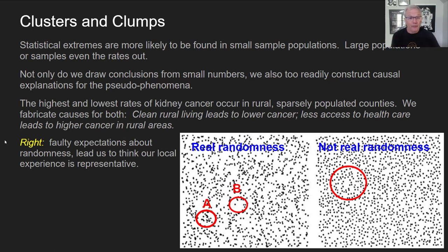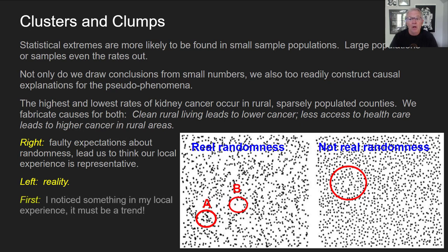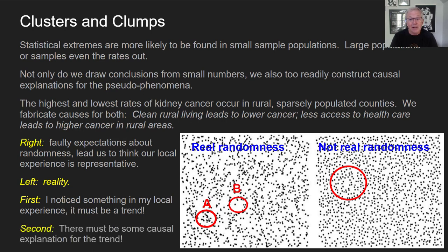In the left pattern of dots, it's more like a real, actual random distribution. What happens is: first I notice something in my local experience — suppose I'm in a busy cluster — and I think, 'There's something going on here. It must be a trend.' Either it's an empty trend or a very busy one: lots of cancer here, or no cancer here. Then, second, I jump to the conclusion there must be some causal explanation. The mistake the law of small numbers warns against is thinking your small sample is representative of a trend at the larger, zoomed-out level.